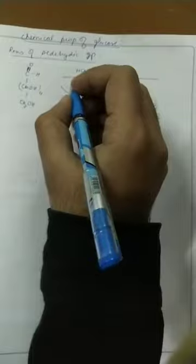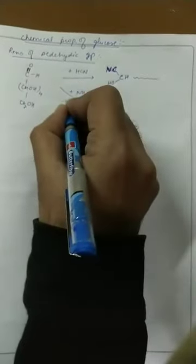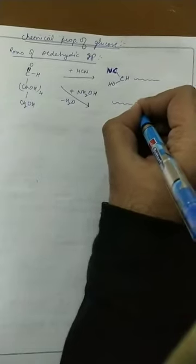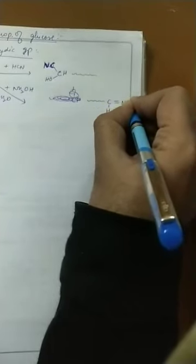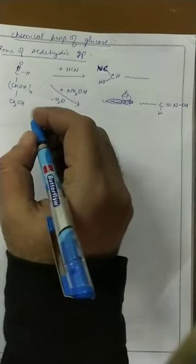Regarding reactions of the aldehyde group with hydroxylamine: if we add hydroxylamine (NH2OH), which is an ammonia derivative, it reacts with the aldehyde group. The nitrogen's two hydrogens react with the aldehyde's oxygen, losing H2O (water). A carbon-nitrogen double bond forms, giving us a product with CH=NOH. The rest of the chain remains as CHOH four times and CH2OH.